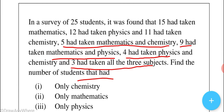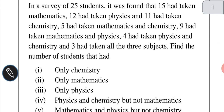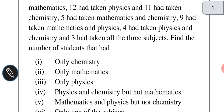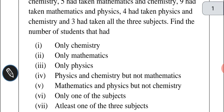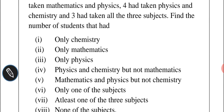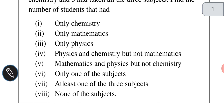Find the number of students that had only chemistry, only mathematics, only physics, physics and chemistry but not mathematics, mathematics and physics but not chemistry, only one of the subjects, at least one of the 3 subjects, and none of the subjects.